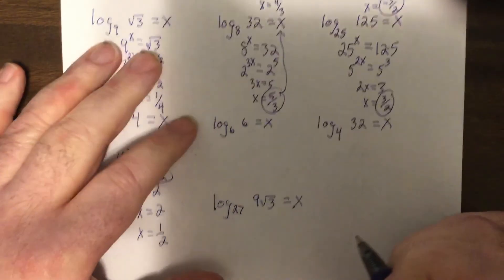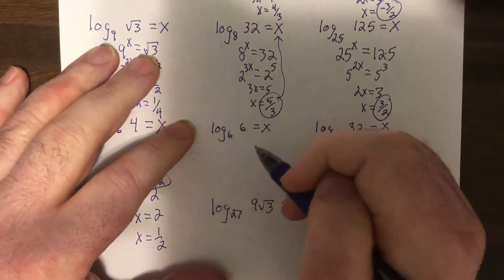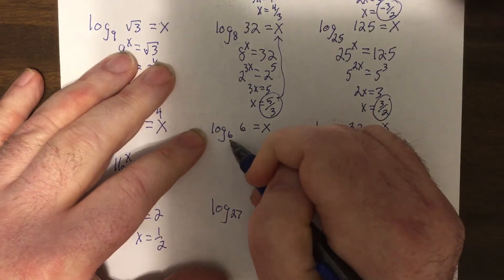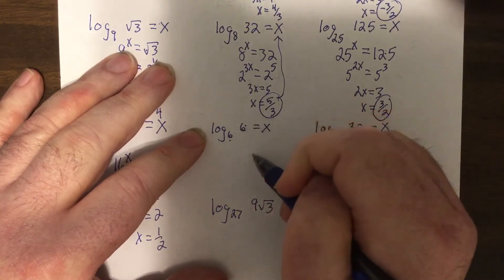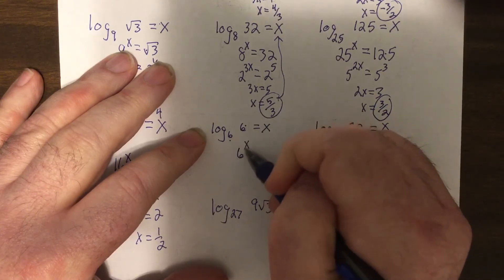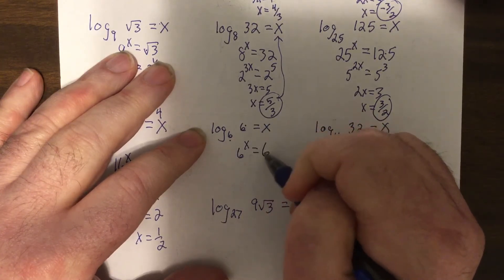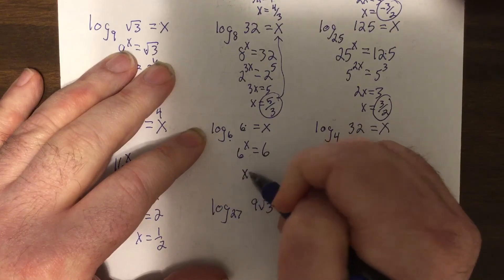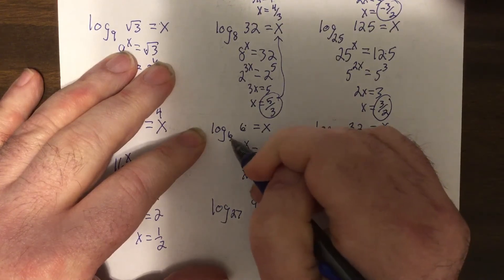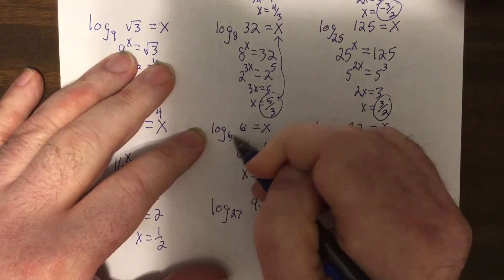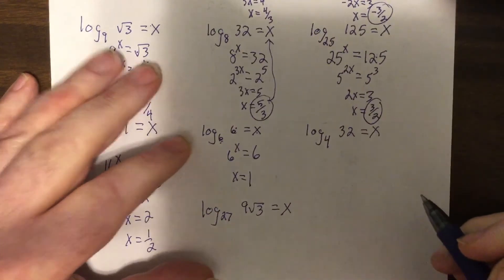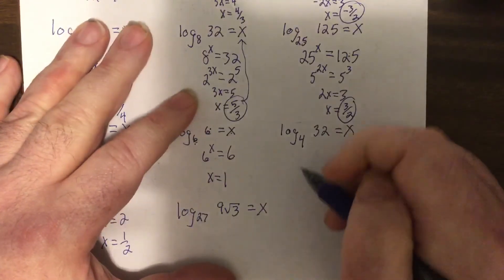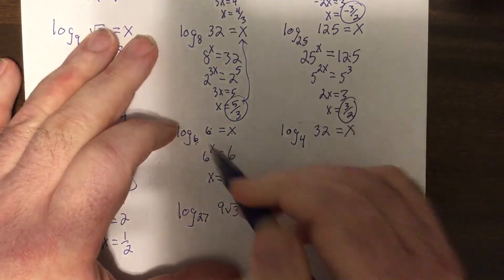Now this one, whenever the base is the same as the answer, what it equals, something interesting happens. So x equals 1, base the same as this is 1. 6 to what power is 6? 1.